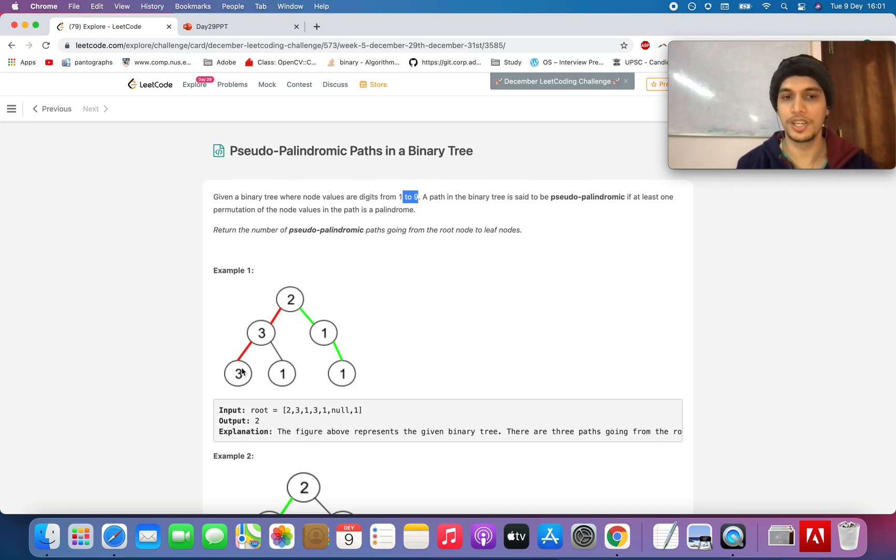For example, in this tree you are given 2, 3, 3 - it is not a palindromic path, it is not directly a palindromic string. However, you can generate a palindromic string using the digits 2, 3, 3 if you reorder them as 3, 2, 3. You can form one of the palindromic strings and hence you need to count it as one occurrence of the pseudo-palindromic path.